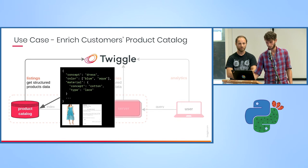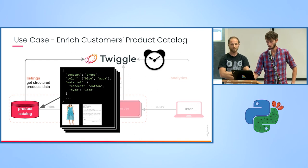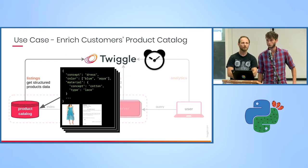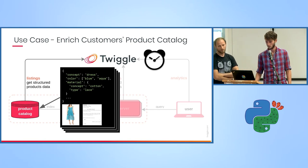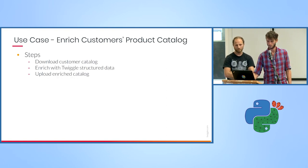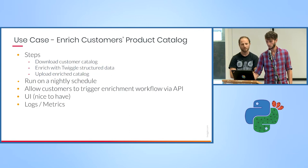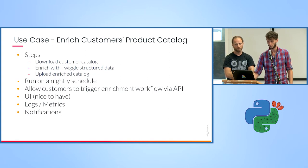We want to get products into the catalog — many of them — and we want it to run every night. Some of our customers allow us to download their catalog and upload it back with an API. So our basic steps will be: download the catalog, enrich it with the structured data, and upload it back. We want the pipeline to run on a nightly schedule. Customers may want to trigger the workflow themselves in case they want to run it in the middle of the day. We want a UI, logs and metrics in case of errors, and notifications for us and our customers.